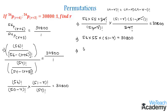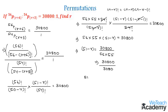We get 30800 divided by 56 into 55, which is 3080. On the left-hand side we have (51 minus r), and on the right-hand side 30800 divided by 3080 gives 10. Transferring terms, we get r equals 51 minus 10, which comes as 41.